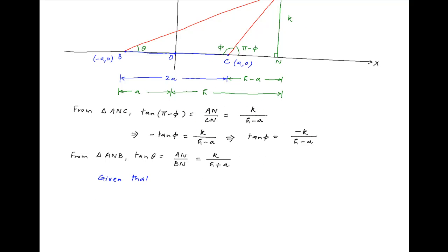Now we are given that tan θ is equal to M times tan φ. Substituting the values of tan θ and tan φ we get K/(H + A) = M × (-K)/(H - A).